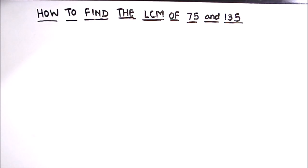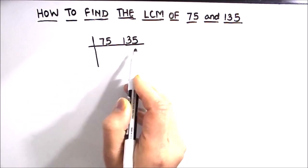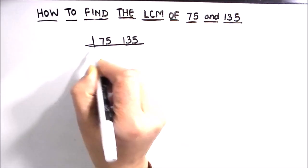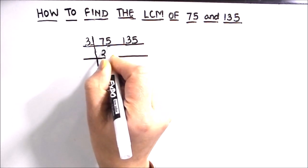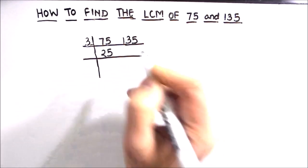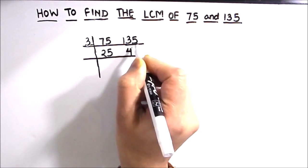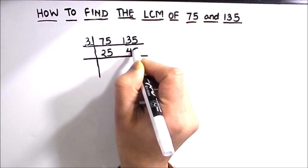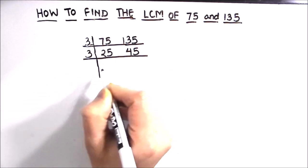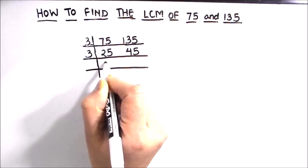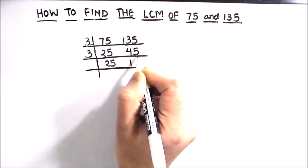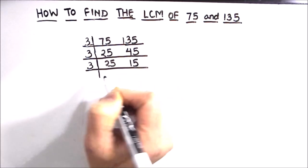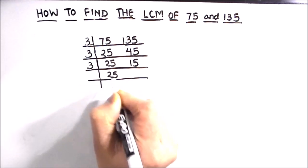Now let's find the LCM of 75 and 135 using the prime factorization method. Since both numbers are odd, we start dividing by 3. 75 ÷ 3: 3 × 25 = 75, so quotient is 25. 135 ÷ 3: 3 × 45 = 135, so quotient is 45. Dividing again by 3: 25 is not divisible by 3, so we write it as is; 3 × 15 = 45.